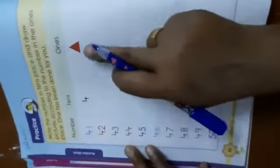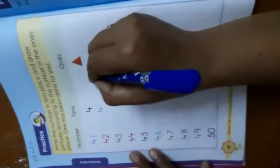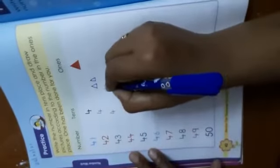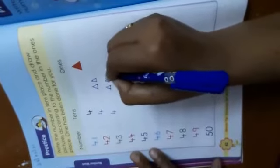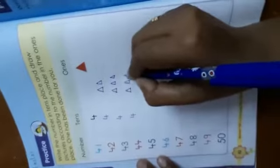4 tens and 1 one. 4, 2, 42. 4 tens, 2 ones. Okay, 4 tens, 3 ones. 4 tens, 4 ones.